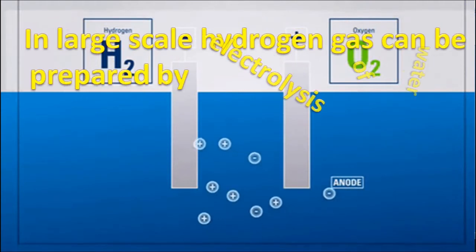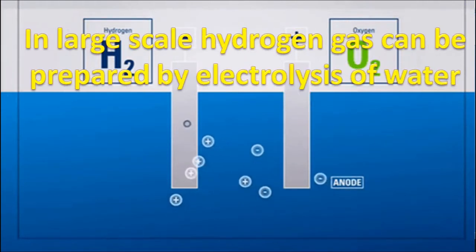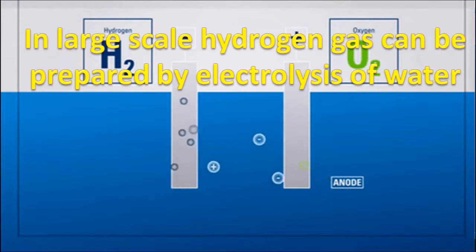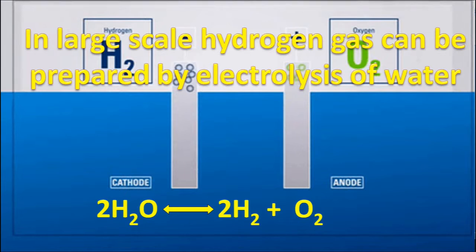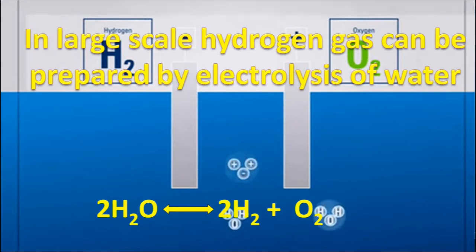In large scale, hydrogen gas can be prepared by electrolysis of water. In this process, electricity is passed through acidified water which decomposes water into hydrogen and oxygen gas.